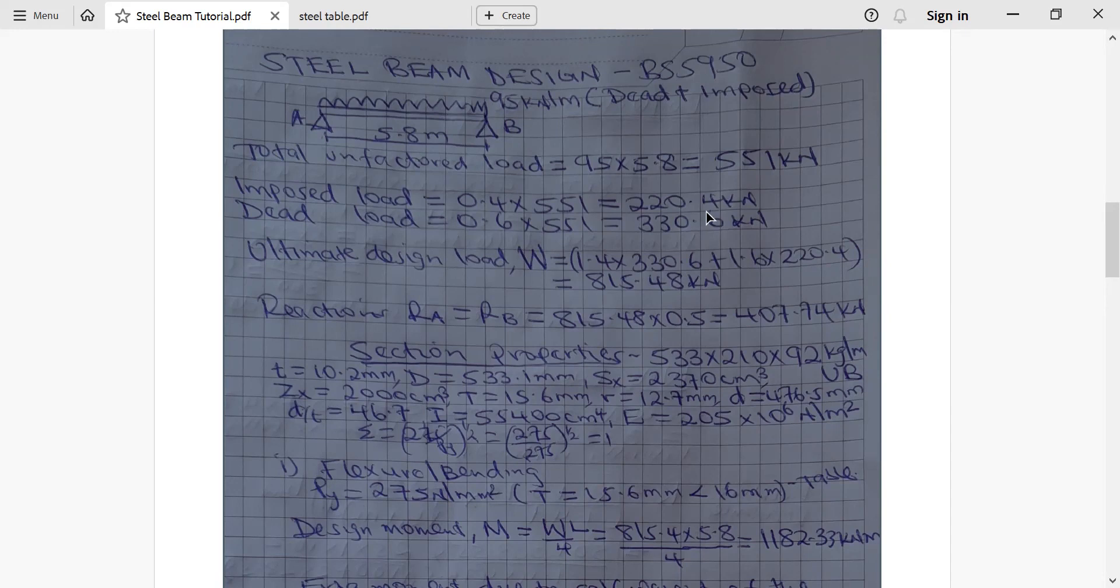Imposed load is equivalent to 40% of total load which is 0.4 times 551, 220.4. Dead load which is 60% of 551 is 330.6 kilonewton. Ultimate design load is equal to 1.4 times dead load plus 1.6 times imposed load which is 850.48 kilonewton.